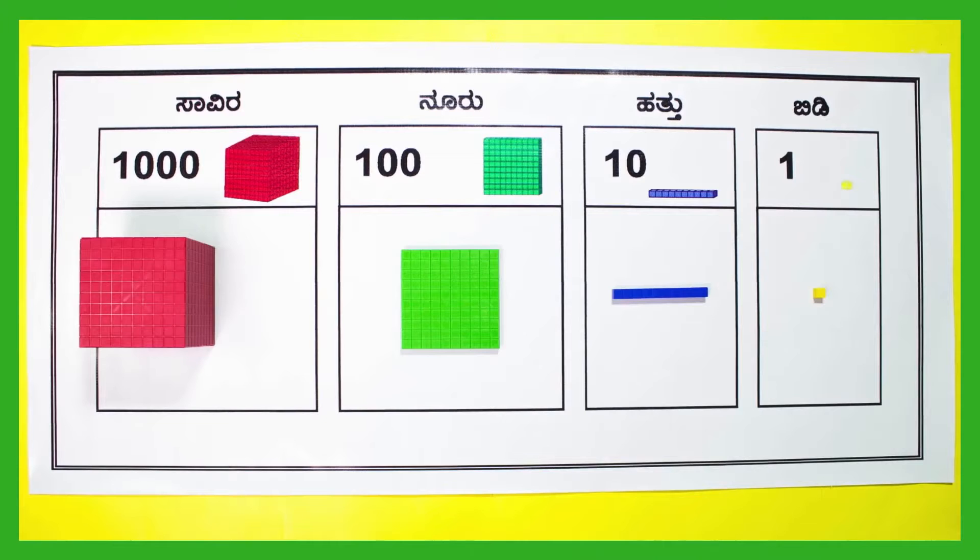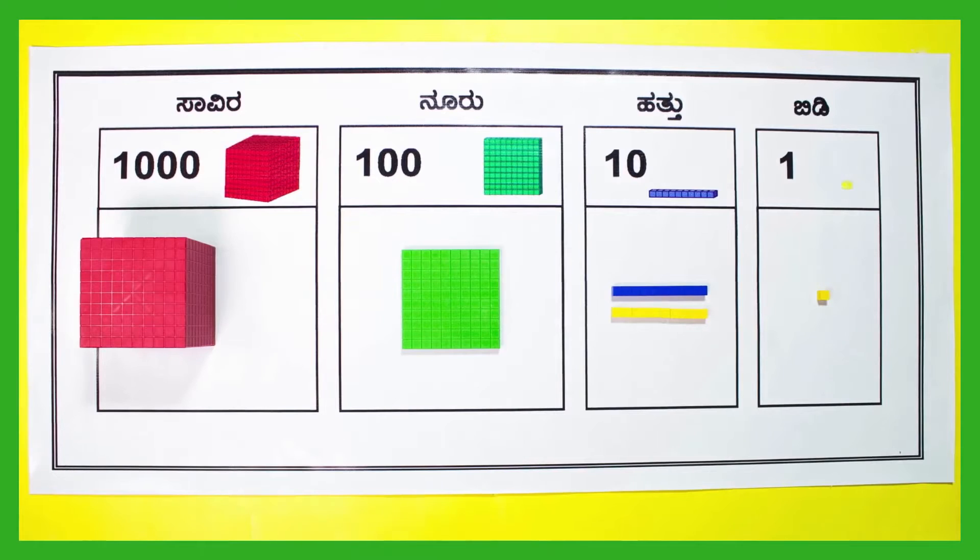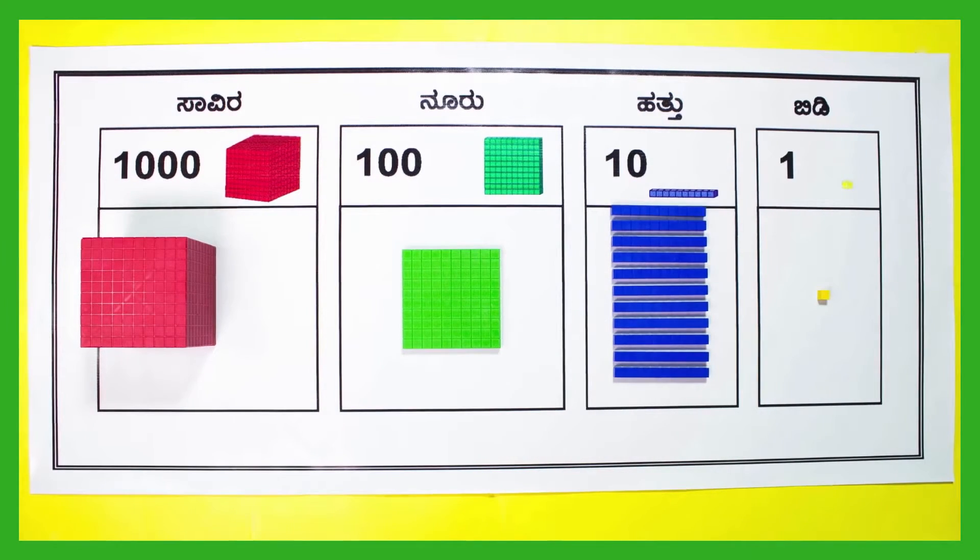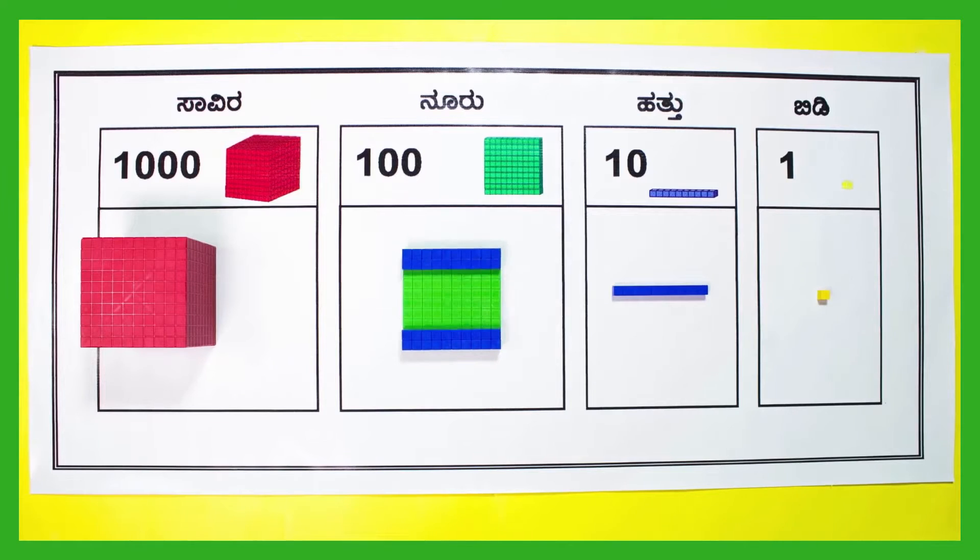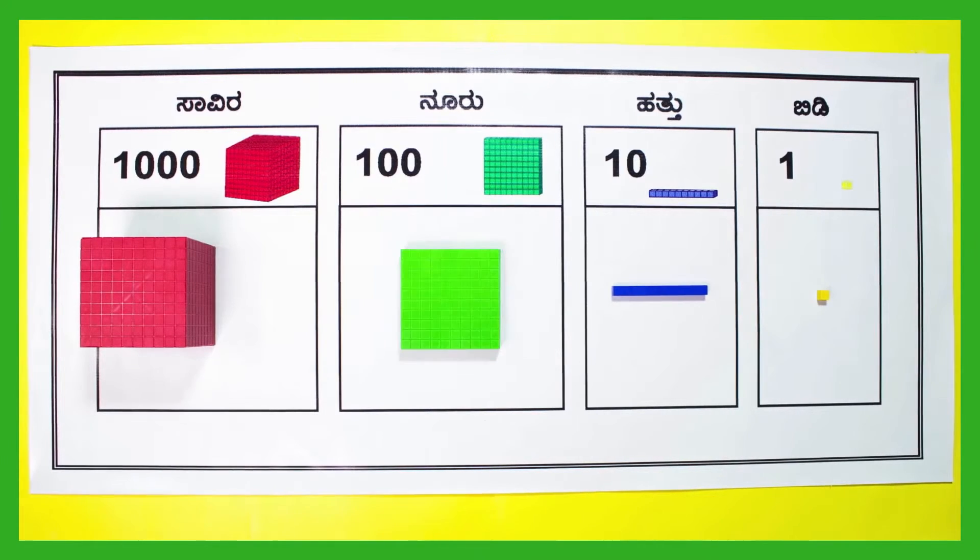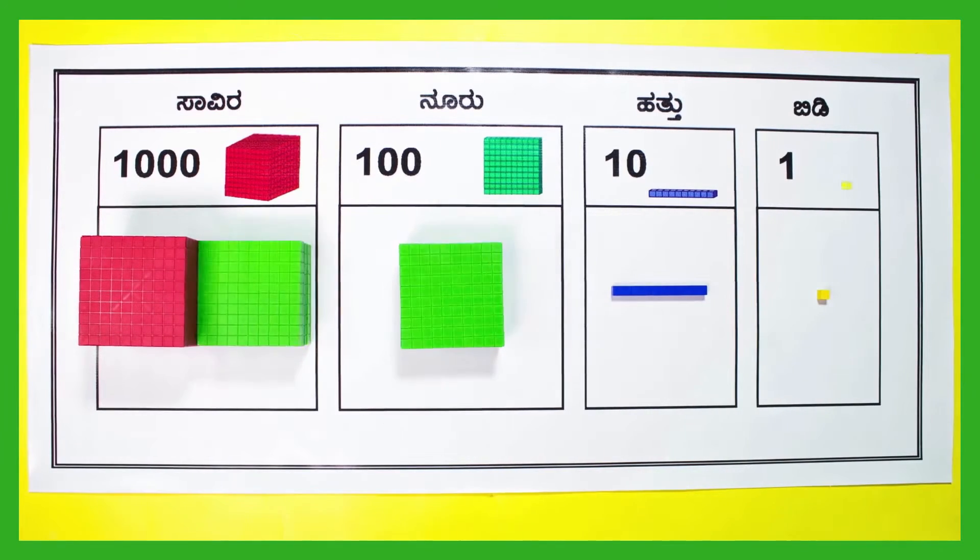Base 10 blocks have yellow cubes which represent units. A blue rod represents 10 units, or 1 ten. A green plate represents a hundred units, or 100. A red cube represents 1000 units, or 1000.